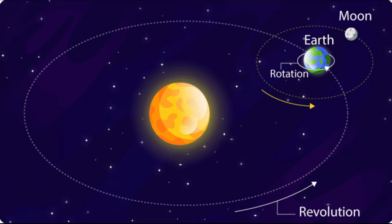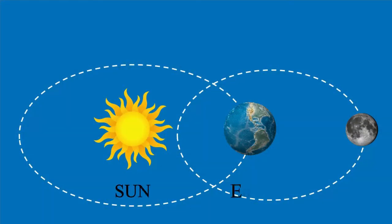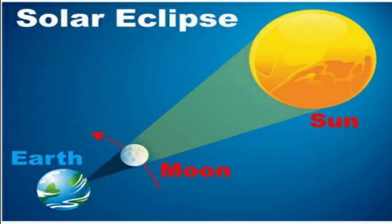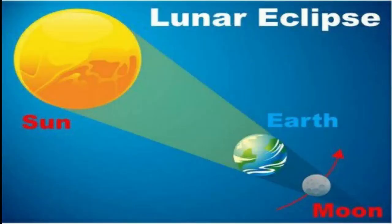There comes a time when the Sun, the Earth and the Moon get aligned in the same straight line. This is when an eclipse occurs. From Earth, we can see two types of eclipses, solar eclipse and lunar eclipse. Surya grahen or chandra grahen.